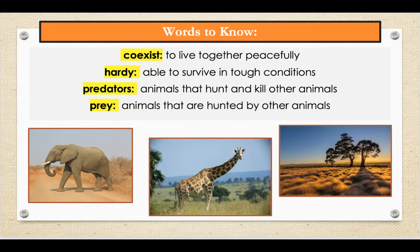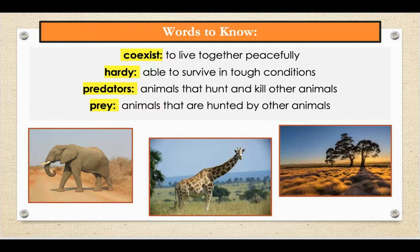Our next word is predators. Predators are animals that hunt and kill other animals. An example: lions are large predators that hunt other animals living in the savannah. And our last word, boys and girls, is prey. Prey are animals that are hunted by other animals. An example: many grasshoppers hide in the grass of the savannah so they do not become prey to the birds flying overhead.